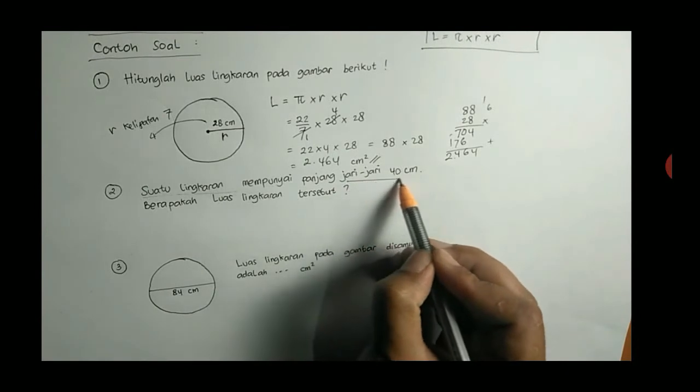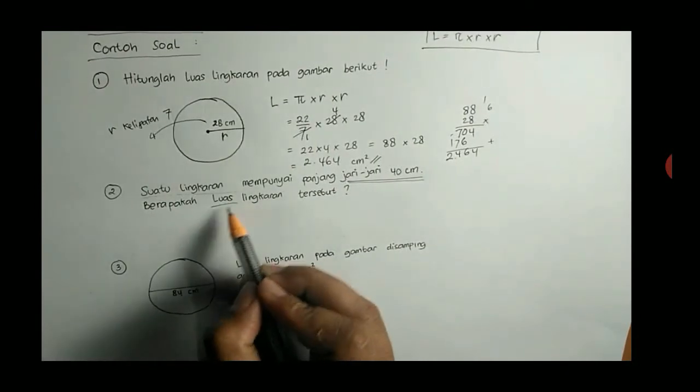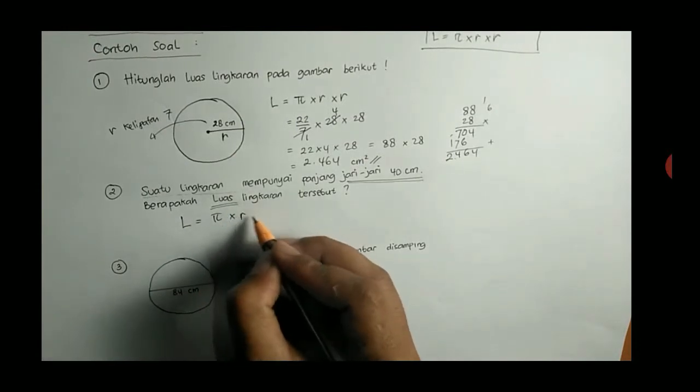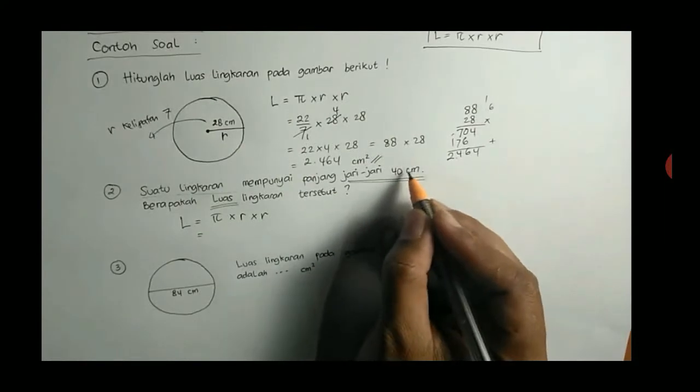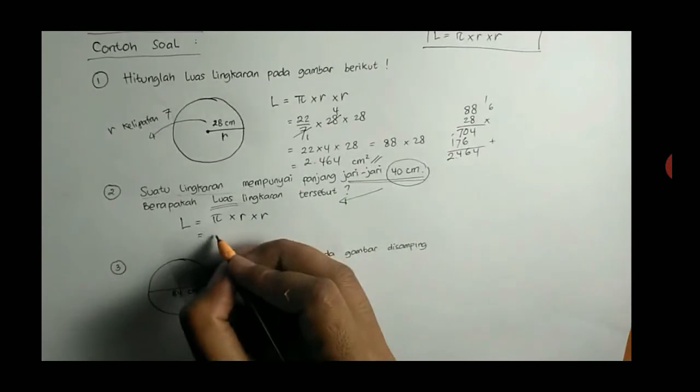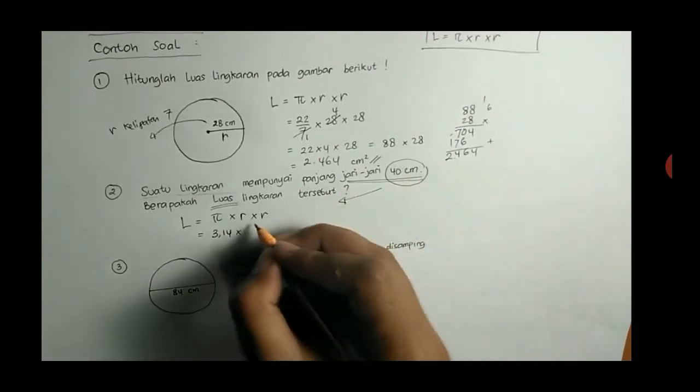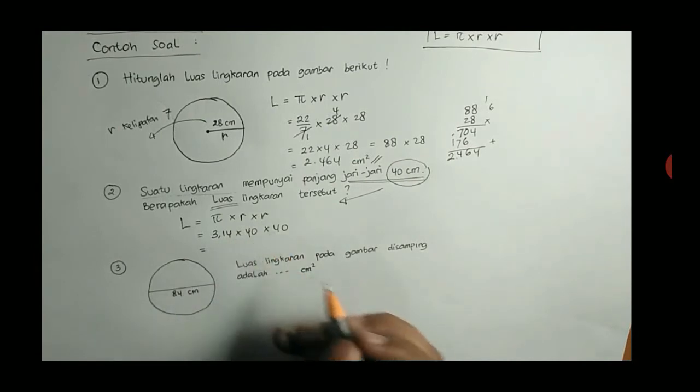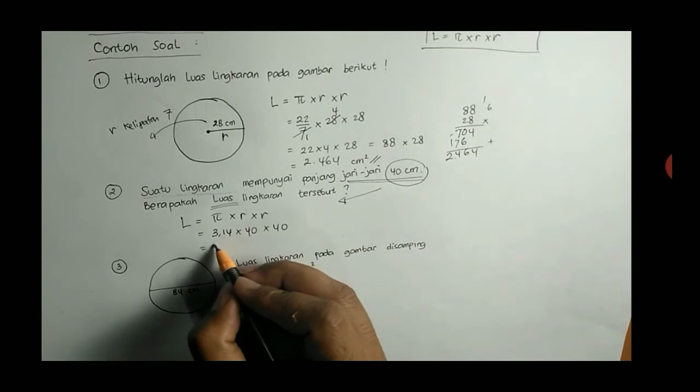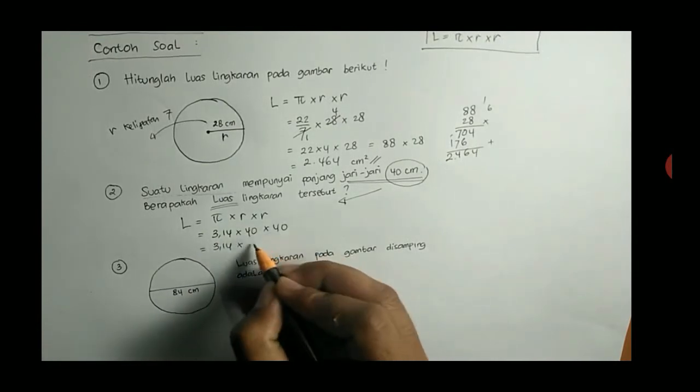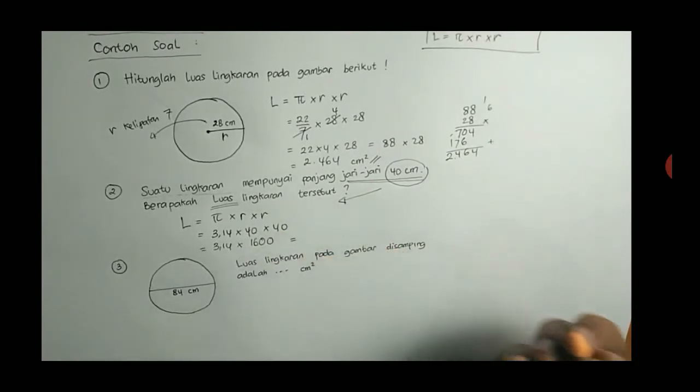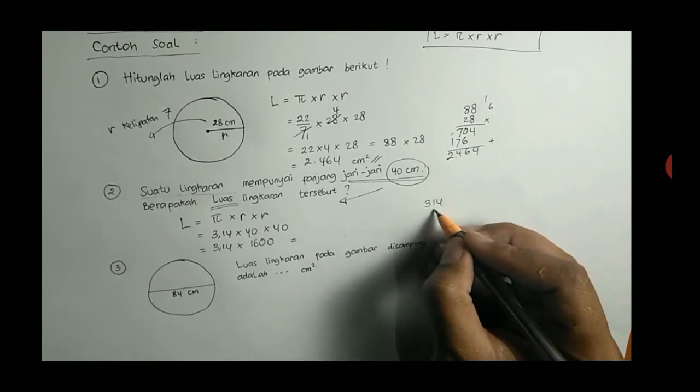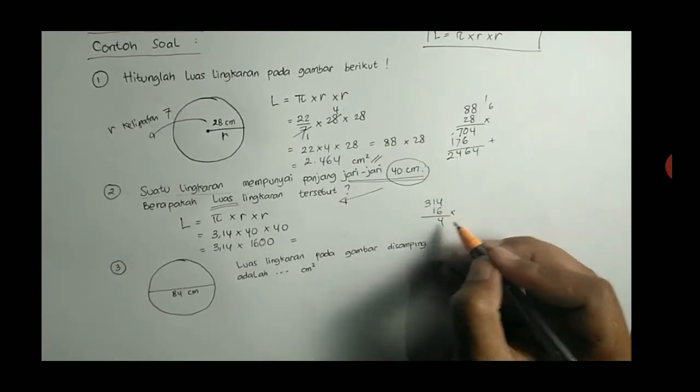Nomor 1 sudah terselesaikan, sekarang nomor 2. Suatu lingkaran mempunyai panjang jari-jari 40 cm. Ingat, soal ini berarti yang diketahui jari-jari atau R. Berapakah luas lingkaran tersebut? Maka kita tuliskan rumusnya L sama dengan P dikali R dikali R. R-nya 40 cm, ini bukan kelipatan 7, sehingga kita gunakan P-nya 3,14. R-nya 40 dikali 40. Ini terserah kalian menghitungnya, boleh 3,14 kali 40 atau boleh juga, saya kira yang lebih mudah. Yang 40 kali 40 aja dulu. 3,14 dikali 40 kali 4, 4 kali 4, 16, 0-nya 2, 1600.